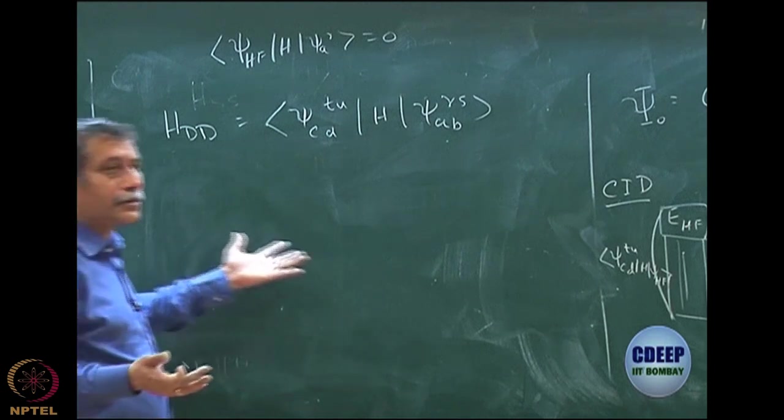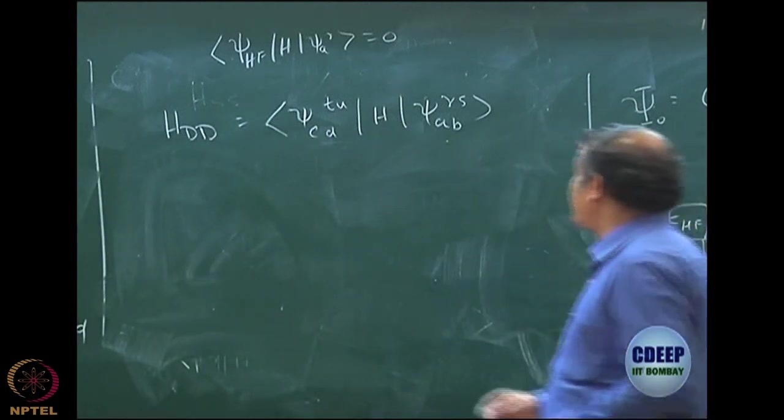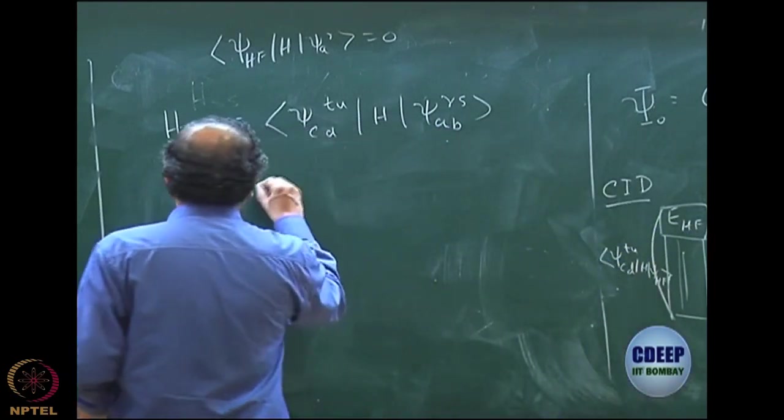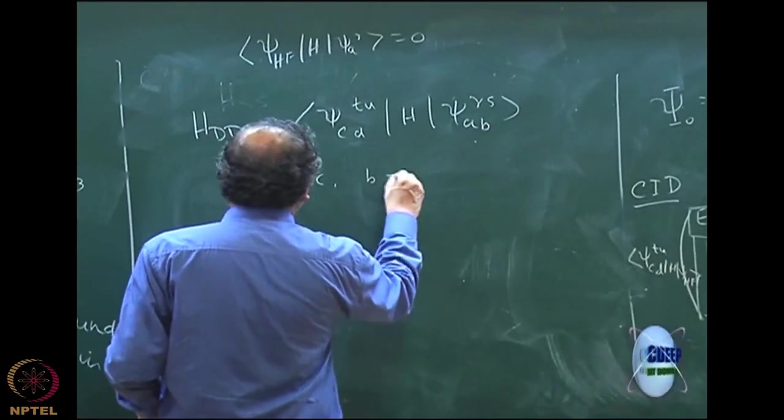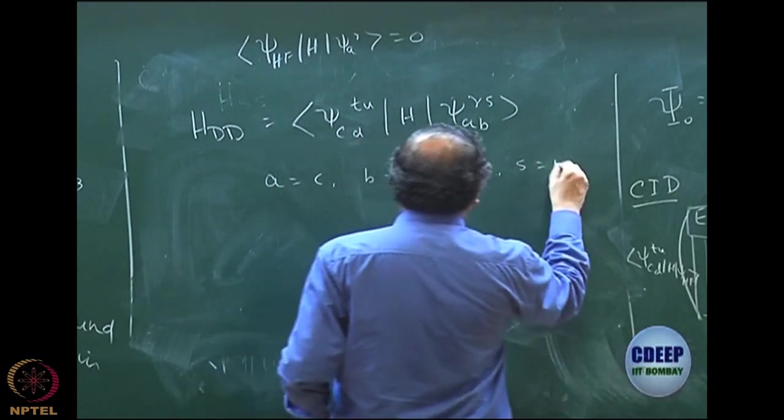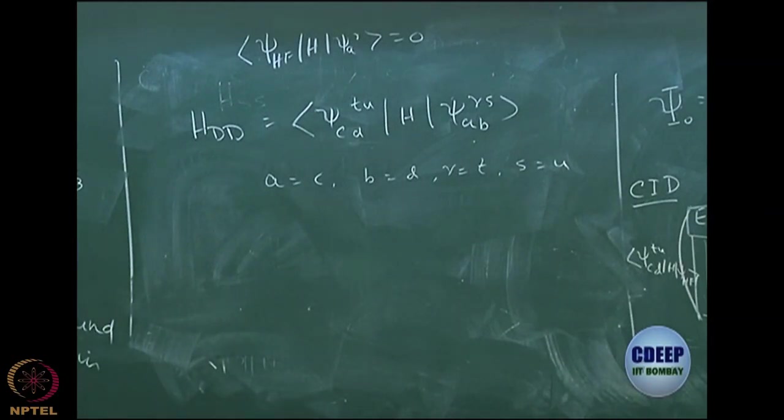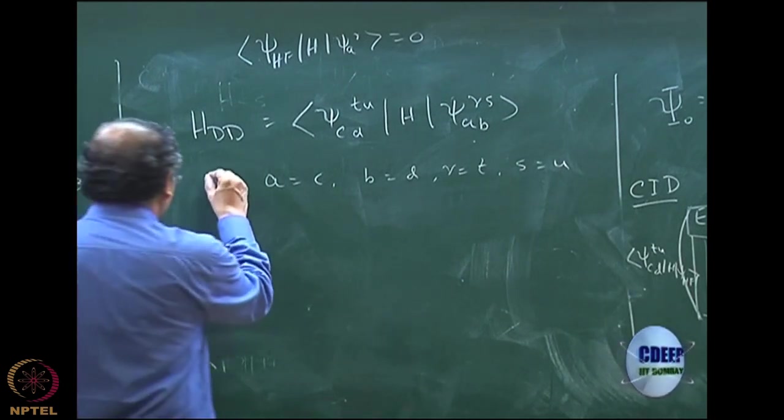For example, so many possibilities are there. Let us say A equal to C, B equal to D, R equal to T, S equal to U. I have two doubly excited determinants with respect to Hartree-Fock, but they are same. Which rule you will apply? First one, the rule A, let us say rule A.